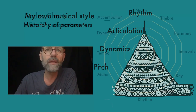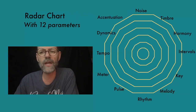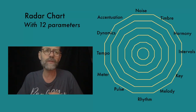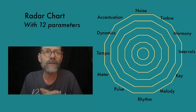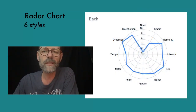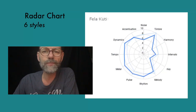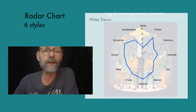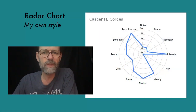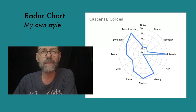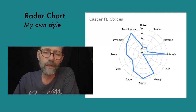Please recall our earlier discussion on the crucial task of determining what information to input into the computer. To better understand the hierarchy of parameters in a specific musical style, I have used what is called the radar chart as an analytical tool. I selected 12 parameters and arranged them in order of similarity: noise, timbre, harmony, intervals, key and so on. I asked ChatGPT to identify and rate six different musical genres — evaluating them against the weight of these 12 parameters. Please follow as I show the results for Bach, Brian Eno, Fela Kuti, Kendrick Lamar, Metallica, Miles Davis, and finally my own musical style.